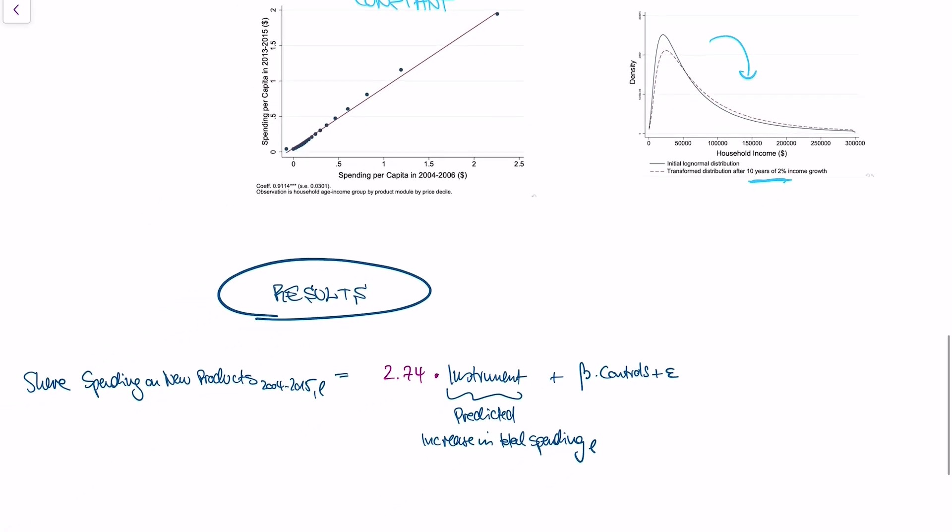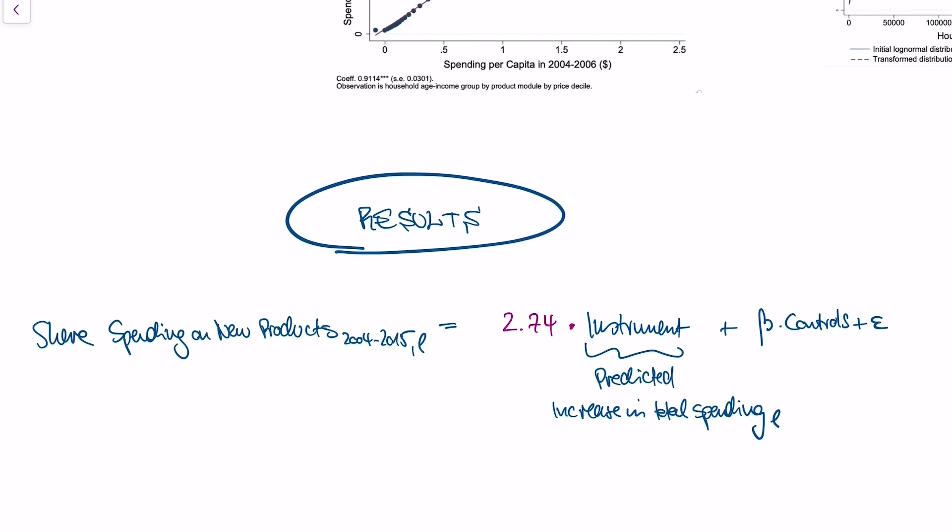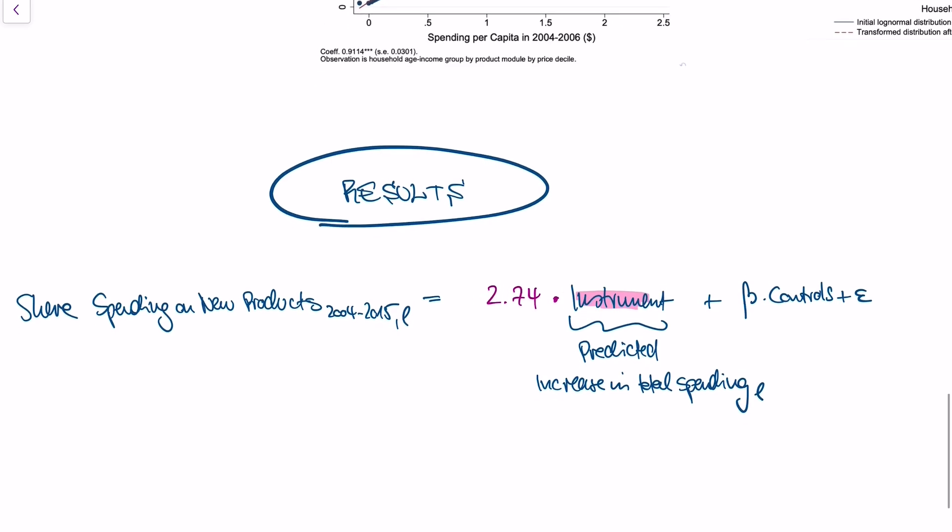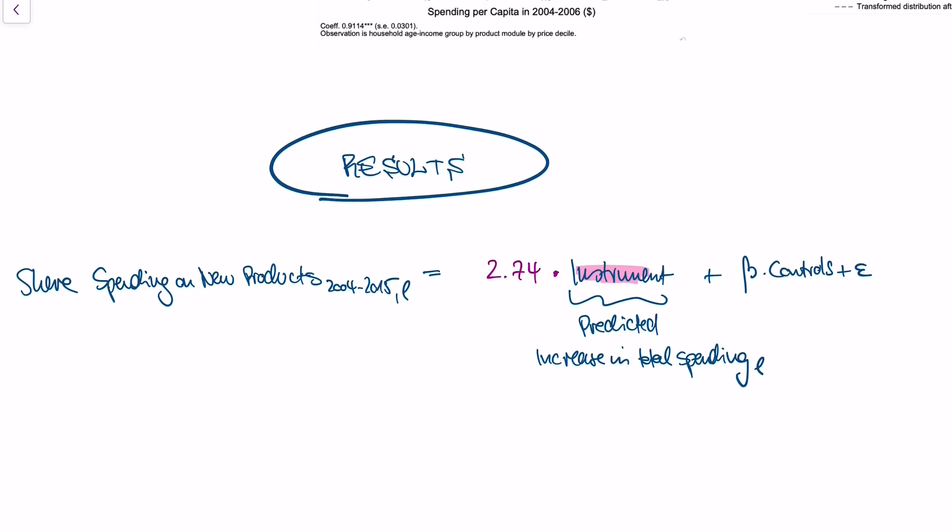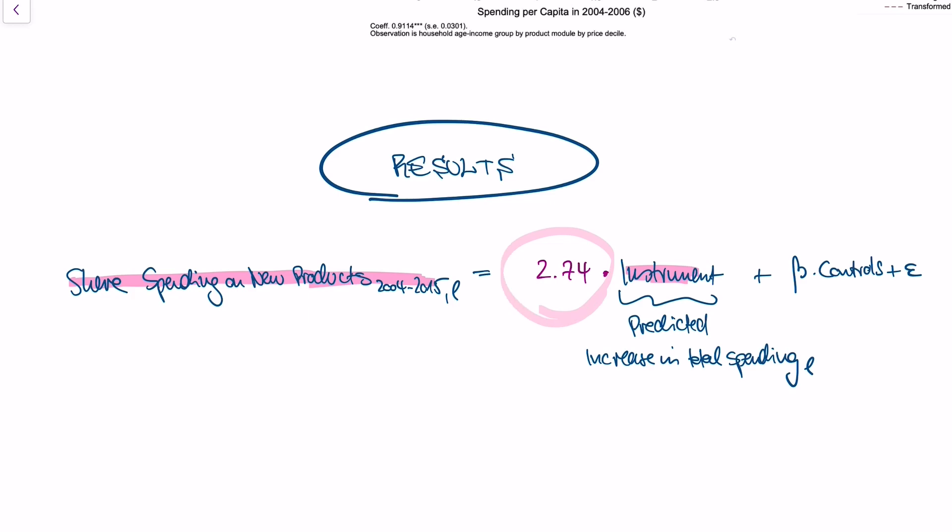So what can we do? Well, we can actually use our instrument to run a regression. And this regression uses our shift-share instrument - the sum of spending shares and change in the number of households per age income bracket, which tells us what we think is the increase in total spending of an age income bracket over the given time of the study. And we regress that on how many new products are developed in this product segment. And what we find is, and this is the magic number of the paper, we find a positive and very significant relationship.